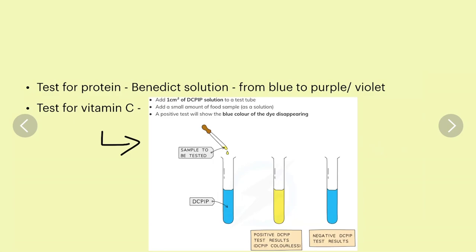The test for vitamin C: add one centimeter cube of DCPIP solution to a test tube. Then add a small amount of food sample in solution form. A positive test will show the blue color of the dye disappearing - the blue color will disappear and become colorless if vitamin C is present.